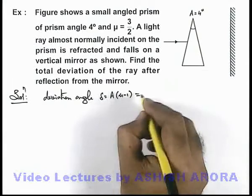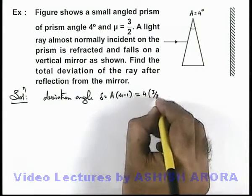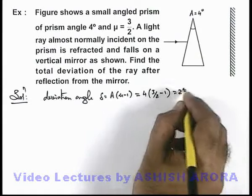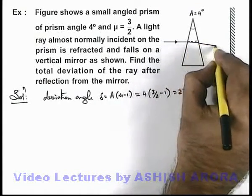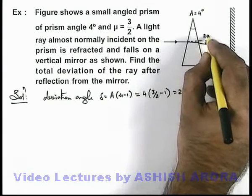So in this situation, as the value of A is 4 and μ is 3/2 minus 1, this is 2 degrees. That means the light ray which is coming out from the prism will be deviated by an angle of 2 degrees.